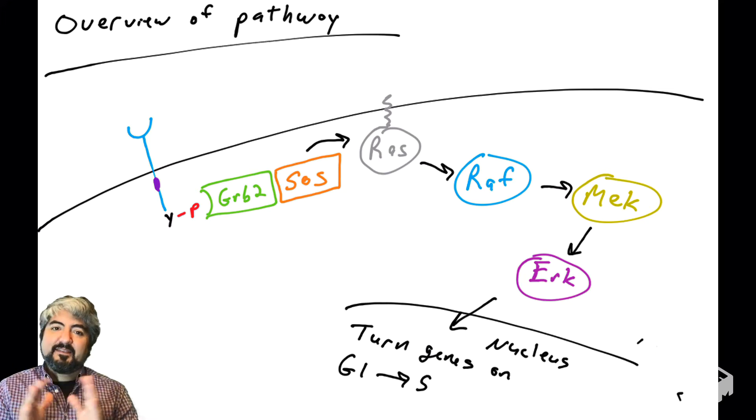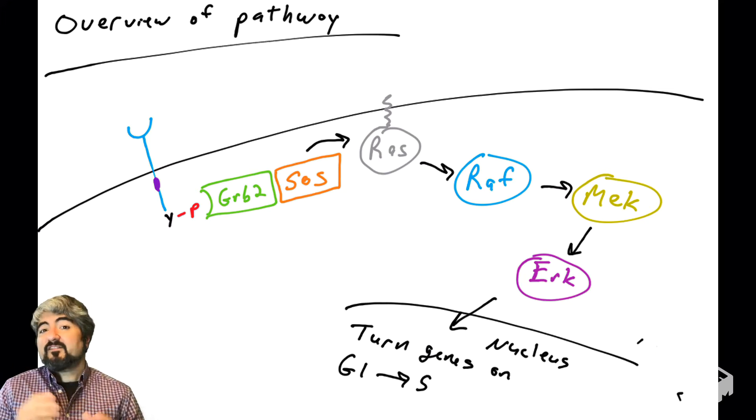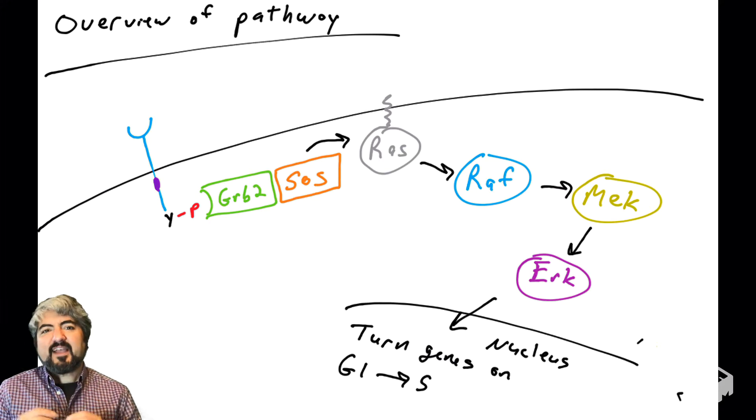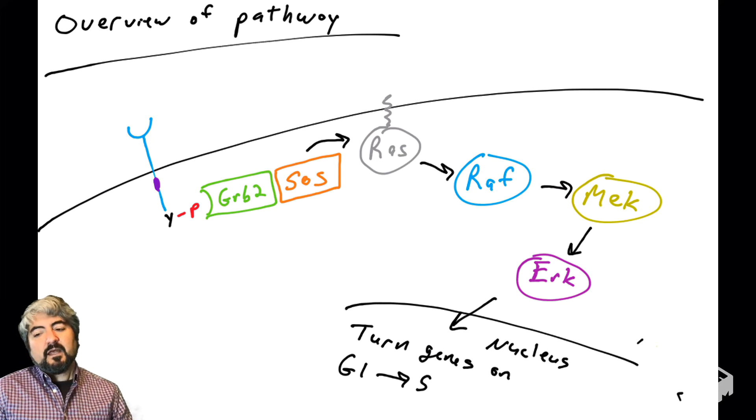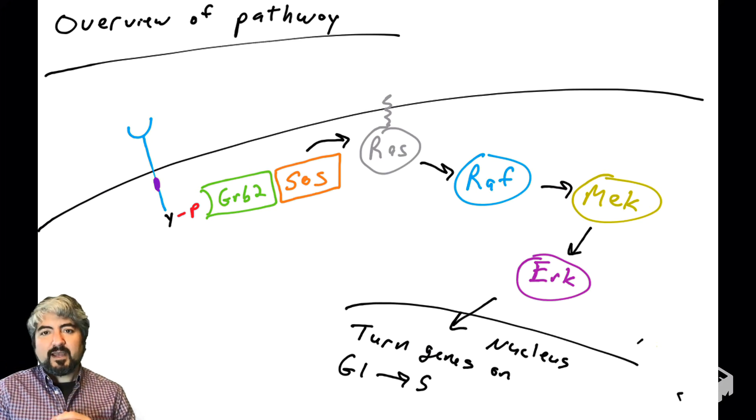RAS is a central player in this pathway, and we're going to have a number of videos on RAS because it's actually a very complicated protein—very complicated in its regulation and its mutations. We'll take it piece by piece and break down how RAS is regulated and how it is mutated in human cancers.